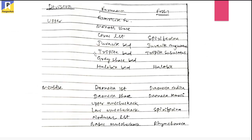The middle Triassic succession of Spiti holds different rock successions such as Basal Muschelkalk, Nodular Limestone, Lower Muschelkalk, Upper Muschelkalk, then Daonella Shale, and Daonella Limestone. The important fossils include Rhynchonella, Spiriferina, Daonella lommeli, and Daonella indica. These fossil names which I have mentioned here will be important for you — you may find questions from these fossil names.